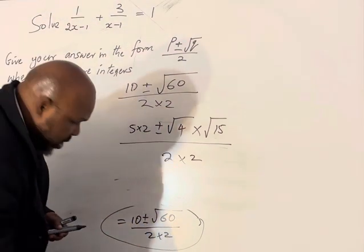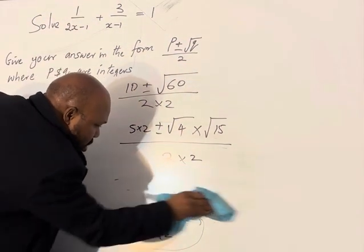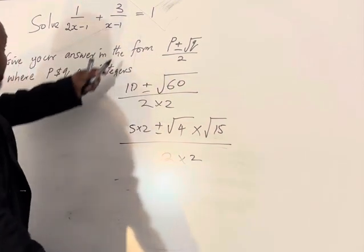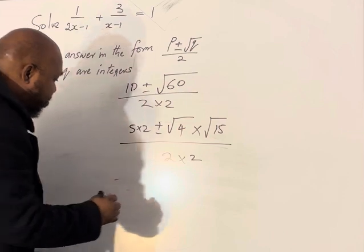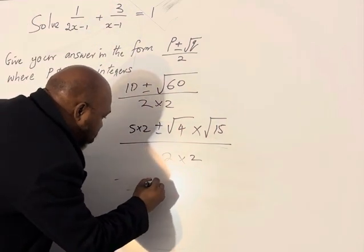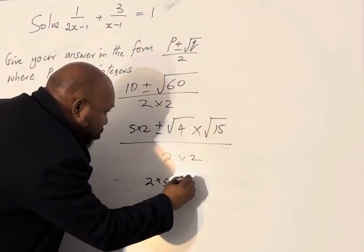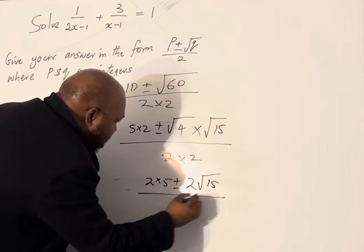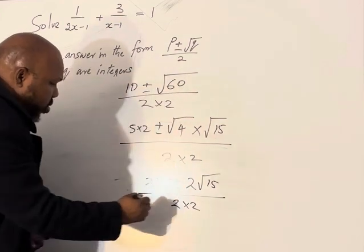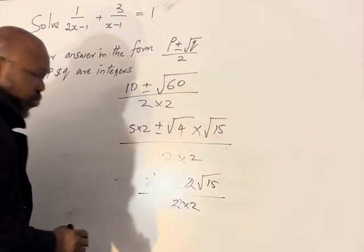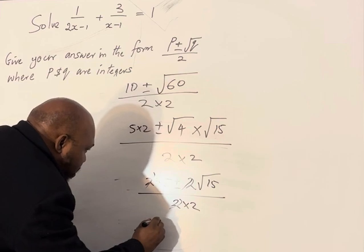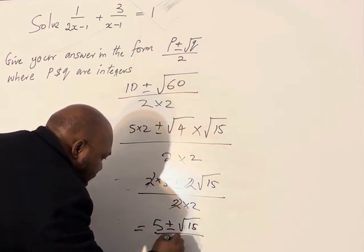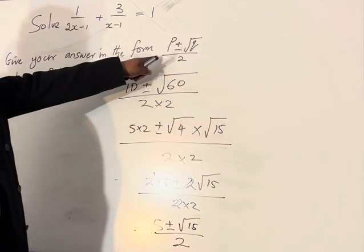In that case, we have 2×5 ± 2√15 over 2×2. When you factor out the 2, you get (5 ± √15)/2. And that's exactly what you want us to do.